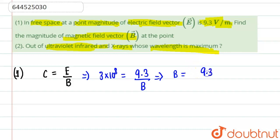It will be equal to 9.3 divided by 3 times 10 to the power 8. So basically magnetic field will come out to be, if you see properly, 3.1 times 10 to the power minus 8 Tesla. So this is basically the answer of part one, the magnetic field.